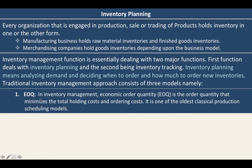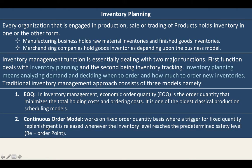EOQ, or economic order quantity in inventory management, is the order quantity that minimizes the total holding cost and ordering cost. It is one of the oldest classical production scheduling models. The next inventory management approach is the continuous order model. It works on a fixed order quantity basis where a trigger for fixed quantity replenishment is released whenever the inventory level reaches the predetermined safety level.